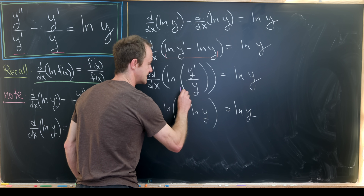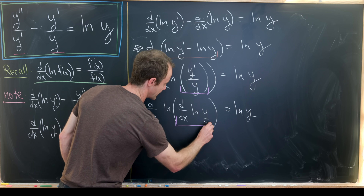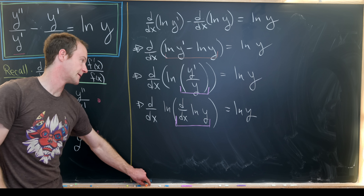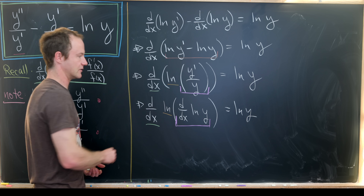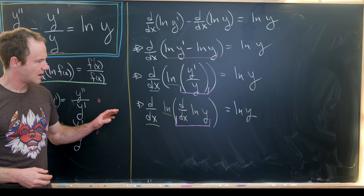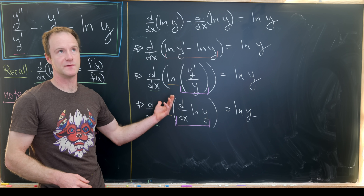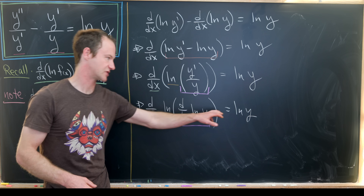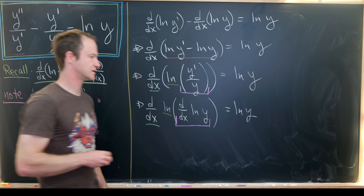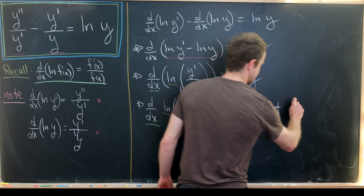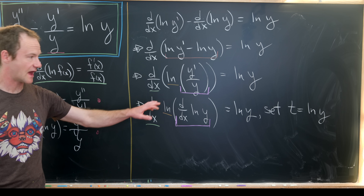To reiterate, we took y'/y and replaced it with d/dx of ln(y), so the ln comes down and the derivative comes down. Now notice the only way we see the dependent variable y is inside of a natural log. That motivates a change of variables: let t = ln(y).